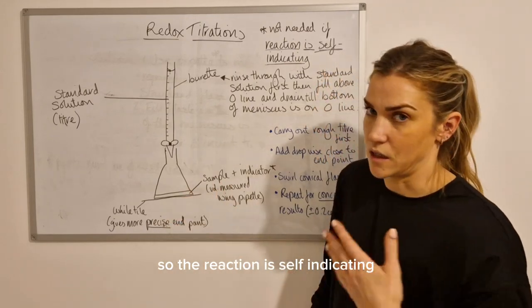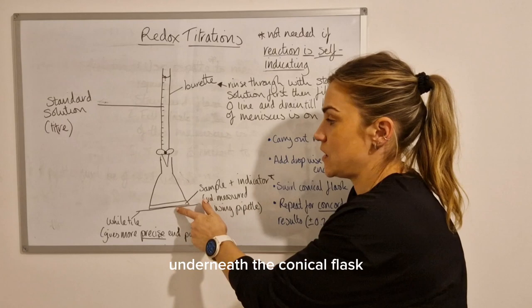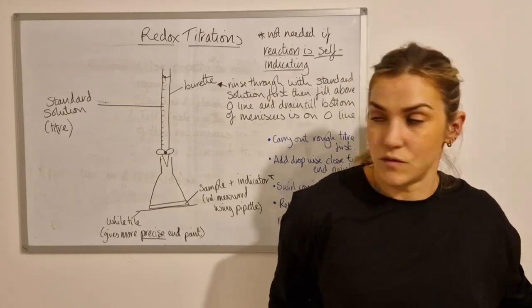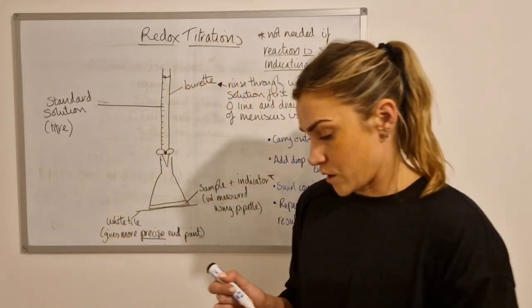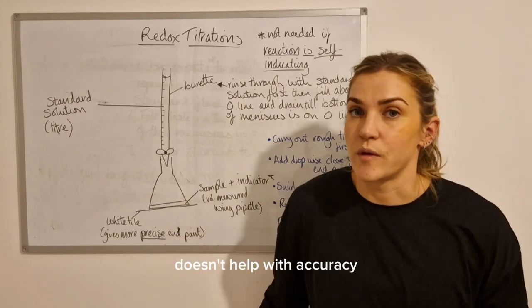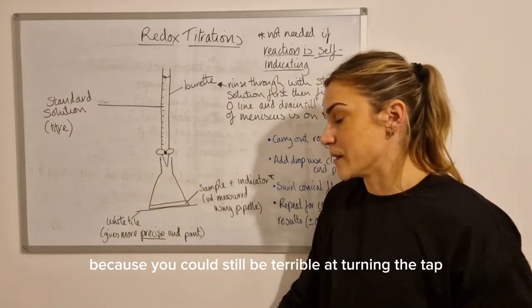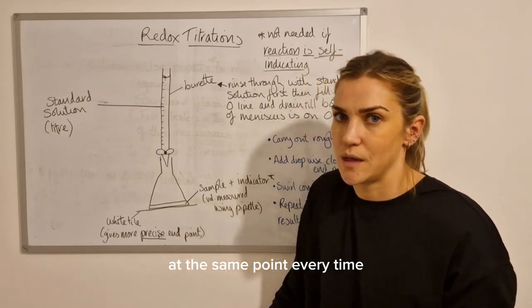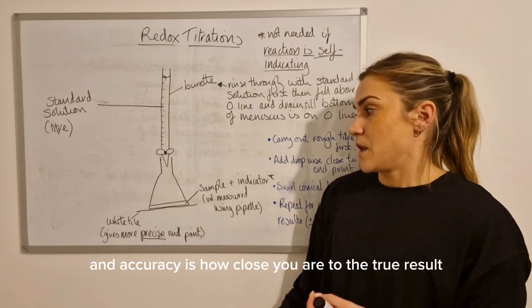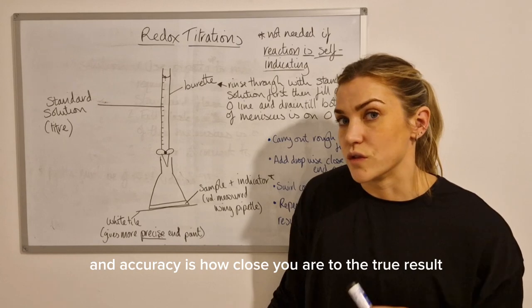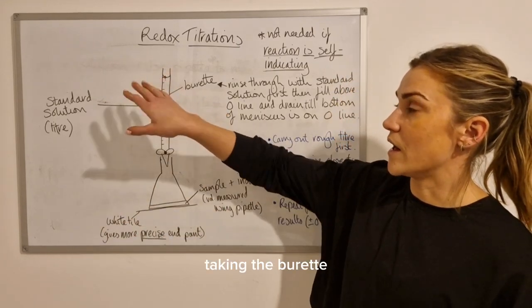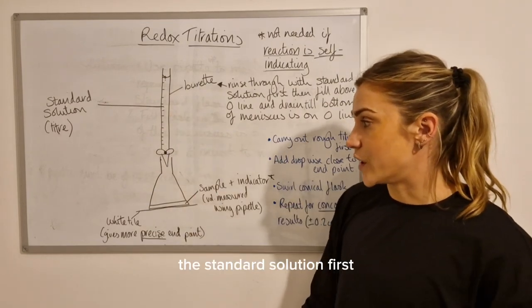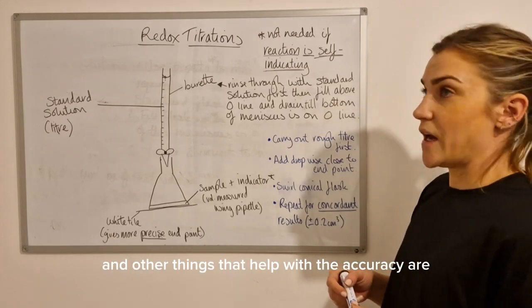The reaction is self-indicating and it goes from colorless to purple. Underneath the conical flask, you put a white tile, which helps you see the color change at the end point. It doesn't help with accuracy because you could still be terrible at turning the tap, etc. Precision is where your results are all close together, so it means that you'll see the color change at the same point every time. And accuracy is how close you are to the true result, which is what taking the burette reading from the bottom of the meniscus does - rinsing the burette through the standard solution first and other things that help with the accuracy.